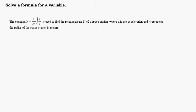In this video, we're going to look at solving a given formula for a particular variable. The problem says the equation n equals 1 over 2π times the square root of a over r is used to find the rotational rate n of a space station, where a is the acceleration, and r represents the radius of the space station in meters. All of this extra information is just telling us that this is a legitimate formula used for a particular application.